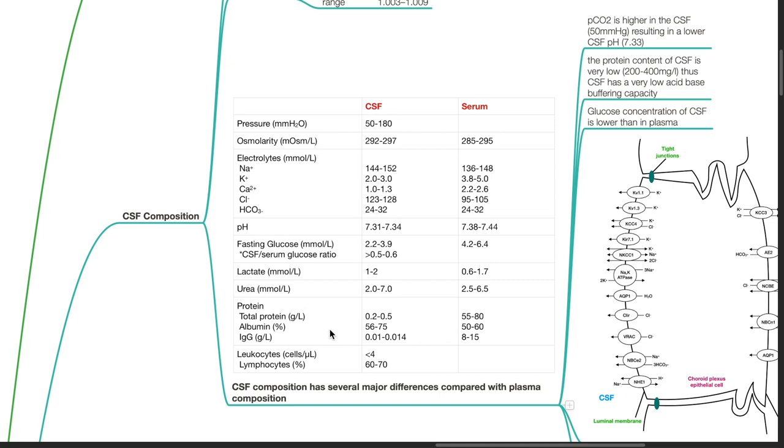CSF albumin is 56 to 75%, while serum albumin is 50 to 60%. CSF IgG is 0.01 to 0.014 grams per liter, while serum IgG is 8 to 15 grams per liter.